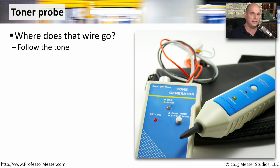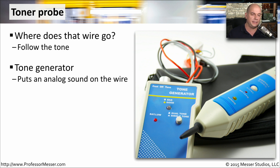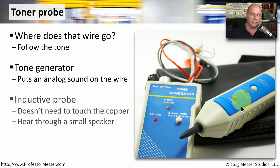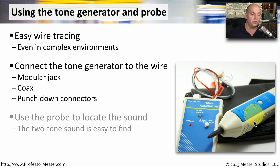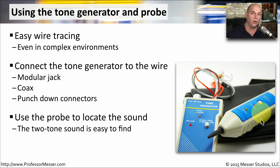If you are working on a network that does not have the proper amount of documentation, you might want to get a toner probe. This is going to help you identify where the two different ends of a cable might be. It consists of a tone generator that puts a sound on the wire, and also an inductive probe. The inductive probe doesn't have to physically touch the copper — it just has to get close. It has a small speaker on it so that you're able to hear the sound being created by the tone generator on the other side. To trace these wires back, connect the tone generator directly to the wire. There might be alligator clips on the tone generator, or there might be RJ45 connectors, which makes it very easy to connect to a modular jack. You then use the probe to go to where you think the other end of the wire might be. It's usually easier to put the tone generator out where the user's workstation is, and then use the inductive probe on your large wall of punchdown blocks.